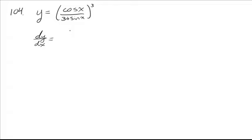So the first thing we're going to do is take the derivative of the outside, which is a power function. So we use our power rule, bring the 3 out front, leave the inside alone, and then decrease the power by 1.